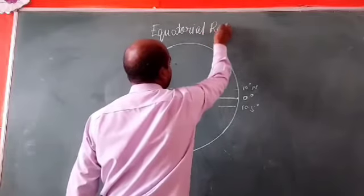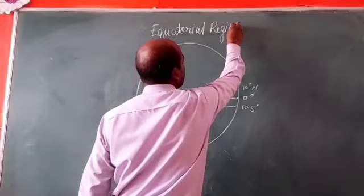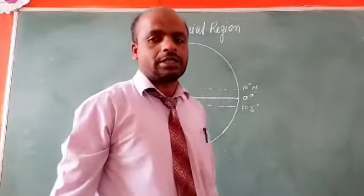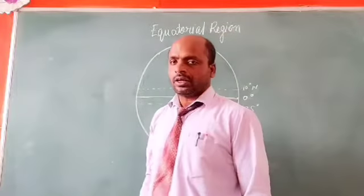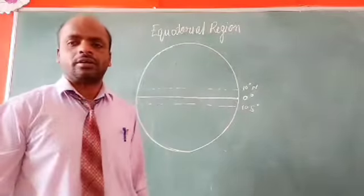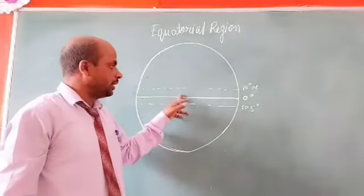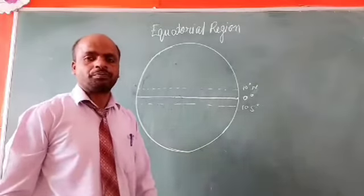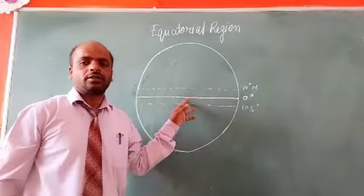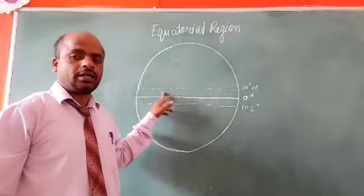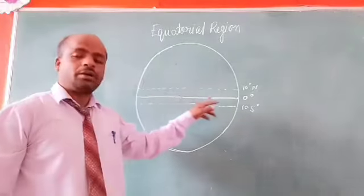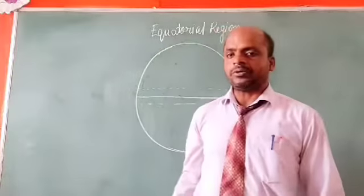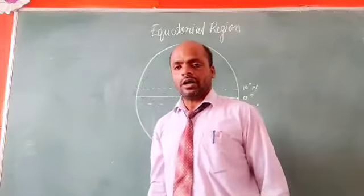We will study about the equatorial region. The equatorial region is located between ten degrees south and ten degrees north of the equator. Here, the sun shines directly on the equator throughout the year. So the climate of the equatorial region is hot and wet.